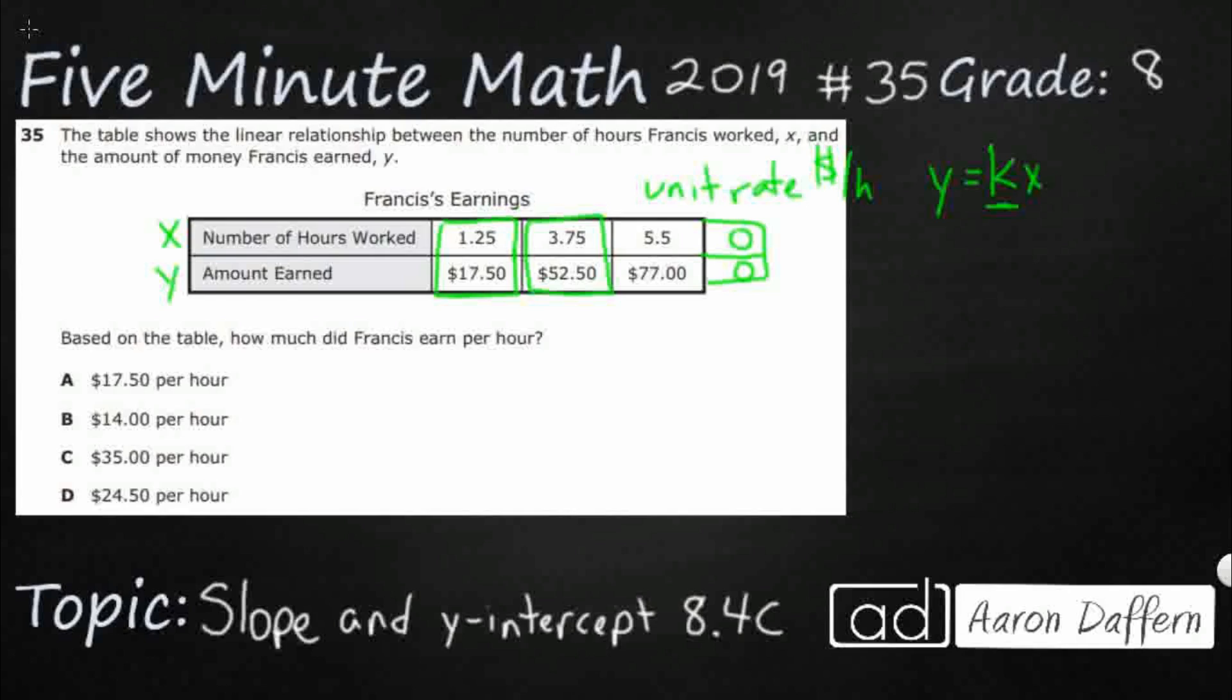Which is just a version of this y equals mx plus b. We just use this when we know that there's not going to be any y-intercept. If you don't work, you don't get any money. And even though that also makes sense, there's nothing in this story problem that says that they start out with a certain amount of money.